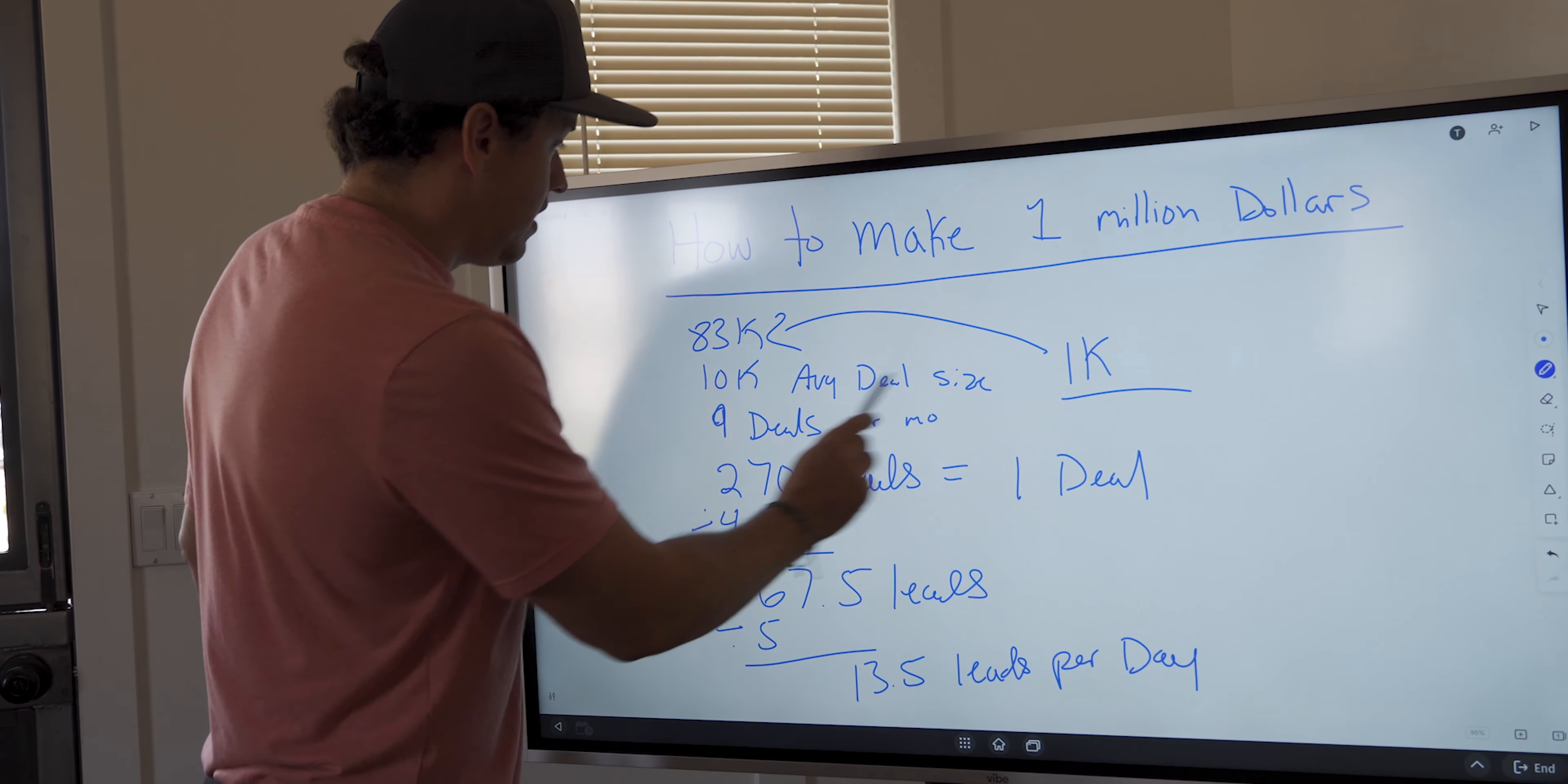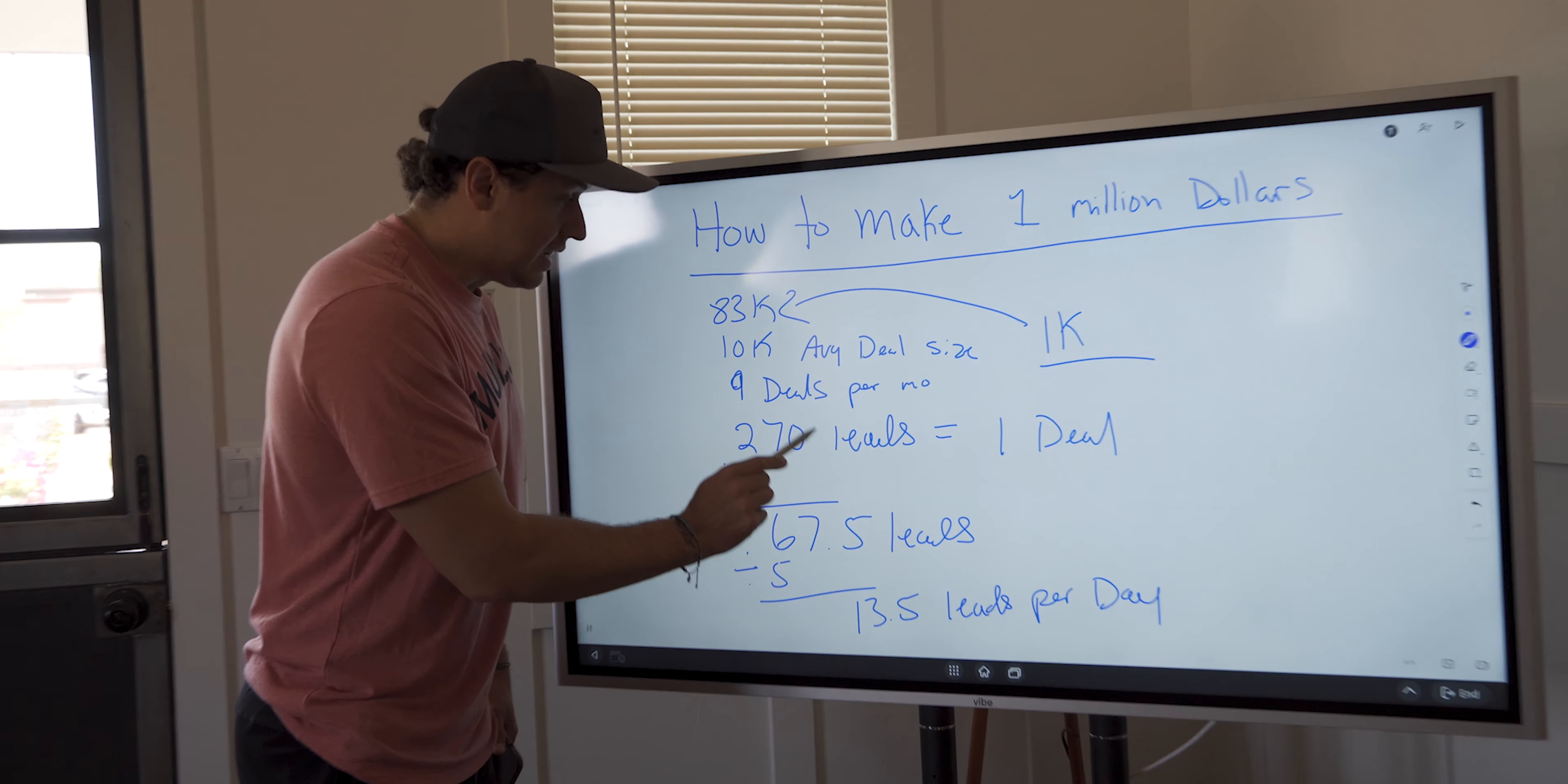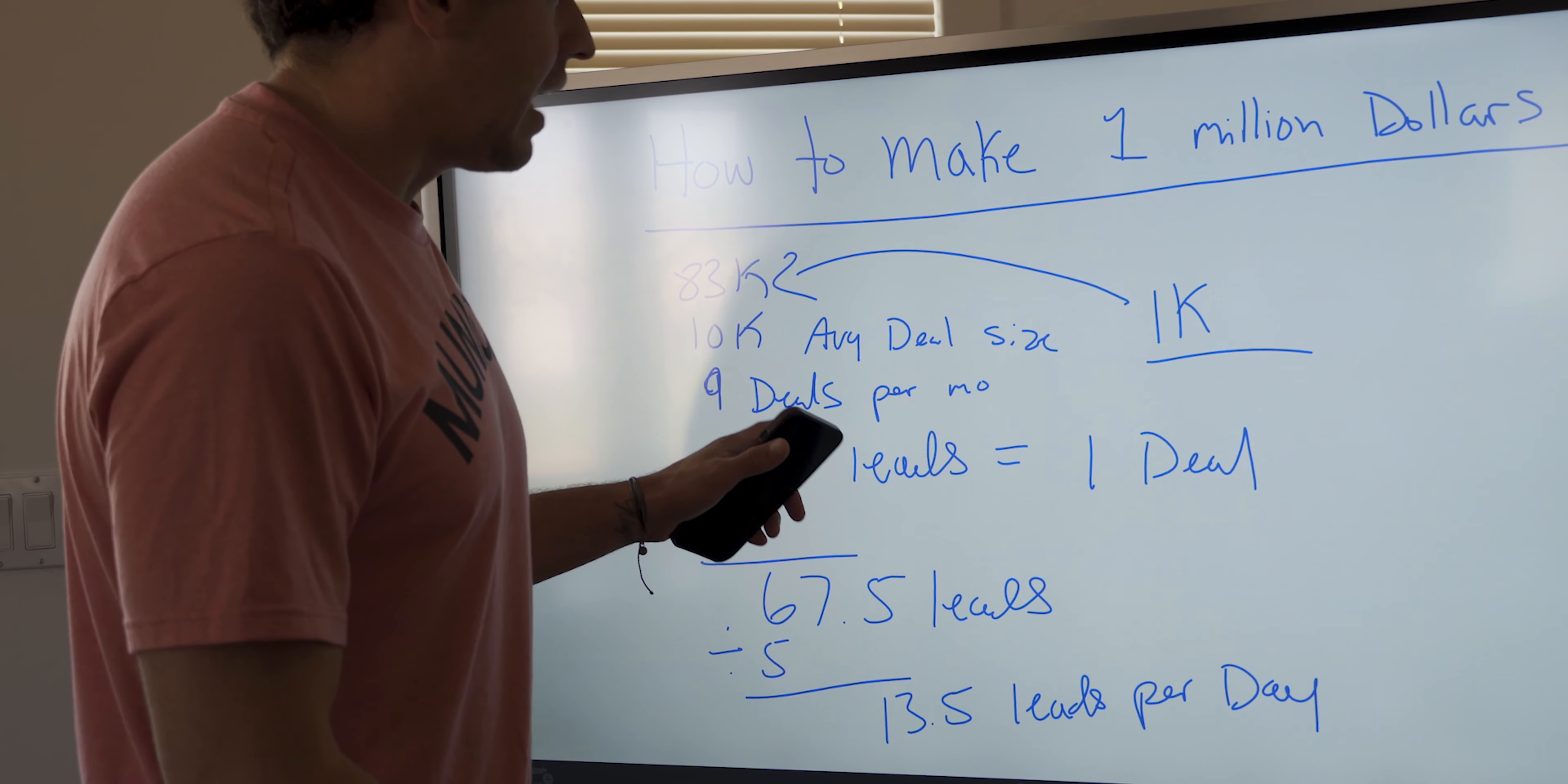But maybe you have a more high-volume business. Whatever your metric is, put your average deal size in there, figure out how many deals you have to do, reverse engineer the amount of leads you need to convert on those, and then reverse engineer how much action you have to take to get that revenue.